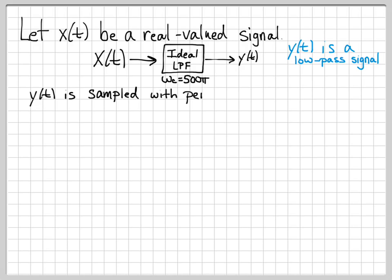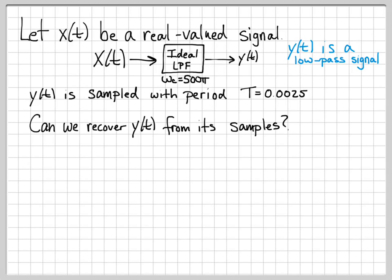What we're going to do now is we're actually going to sample y of t, and we're going to sample it with a sampling period of T equals 0.0025 seconds. The question we have is, can we recover y of t from its samples? So we have a signal y of t, we're sampling it. Can we recover y of t from these samples?